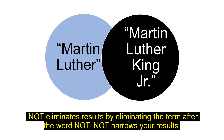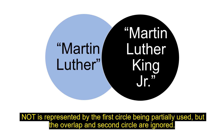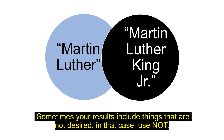NOT eliminates results by eliminating the term after the word NOT. NOT narrows your results. NOT is represented by the first circle being partially used, but the overlap and the second circle are ignored. Sometimes your results include things that are not desired — in this case, use NOT.